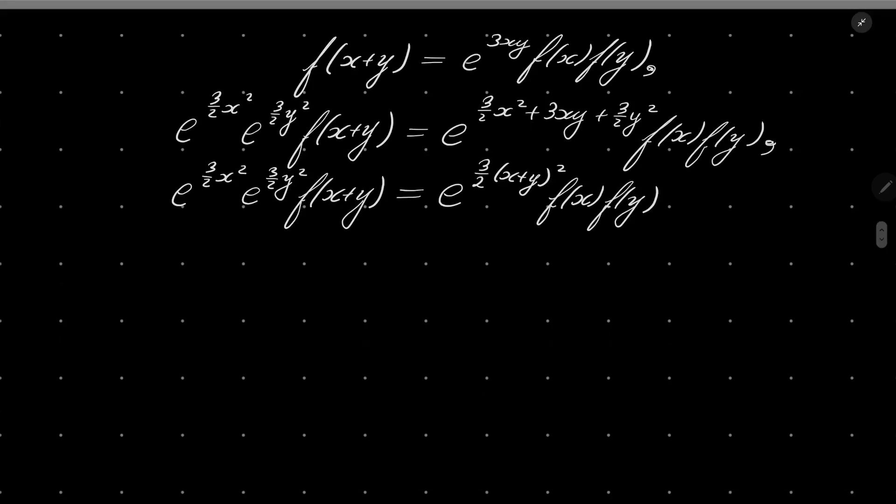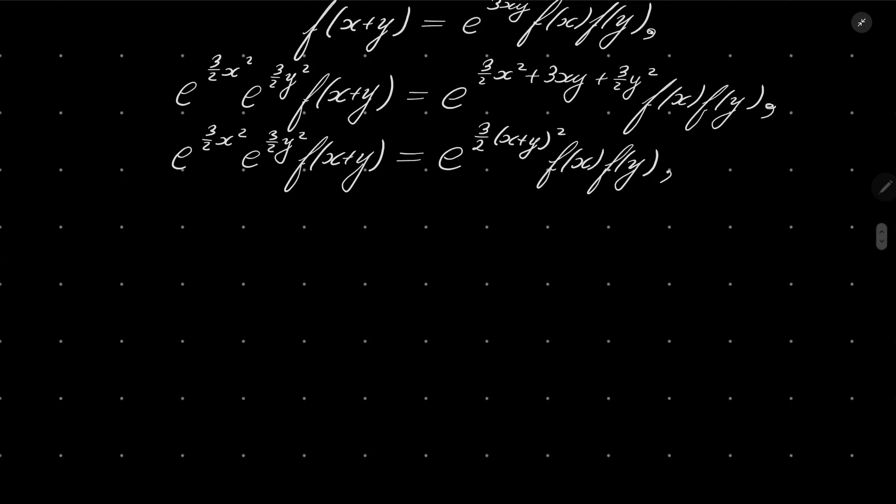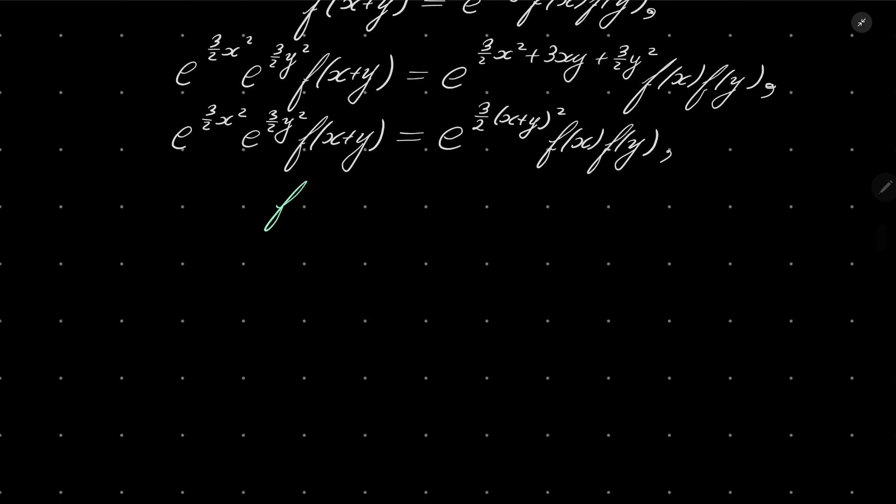And now, after first multiplying by e to the power 3 over 2x squared and so on, now I will divide. I will now divide and I will get the following. Or maybe, you know what, I will maybe write with negative exponents, e to the power minus 3 over 2(x+y) squared f(x+y) equals e to the power minus 3 over 2x squared f(x), e to the power minus 3 over 2y squared f(y).